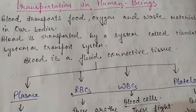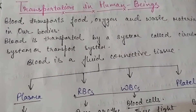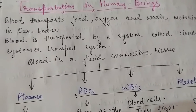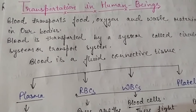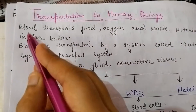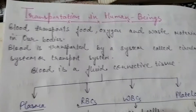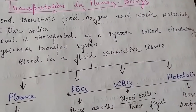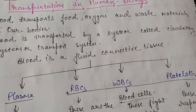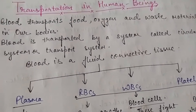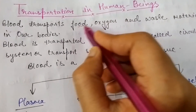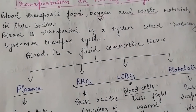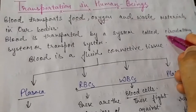In biology, transport is a life process in which substances are absorbed in the body of any organism and carried to different parts of the body. The medium that does this work is blood. Blood transports food, oxygen, and all waste material in our body. The system through which blood transports is called the circulatory system or transport system.